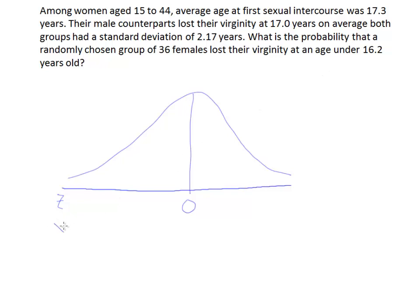Now, as long as n is over 30, we can assume that the distribution of x-bar will be normal. So the mean for this problem, according to what we're looking for, which is females here, it says that for females, or women, it was 17.3 years, the average age. So 17.3 would be here.